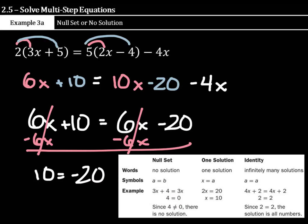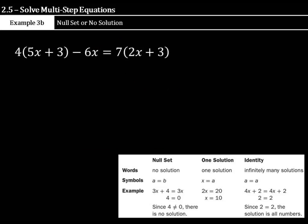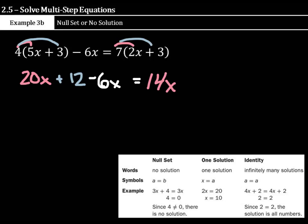Well, 10 equals negative 20 can't happen, so this is another example where there is no solution to the problem. And no solution is your answer. If we look at one more very similar to this, let's distribute our 4 times 5x to be 20x. Our 4 times 3 is a positive 12. We still have this minus 6x hanging out. It's going to equal 7 times 2x is 14x, and 7 times 3 is a positive 21. Now, again, before I move anything from side to side, let's combine our 20x with our negative 6x.